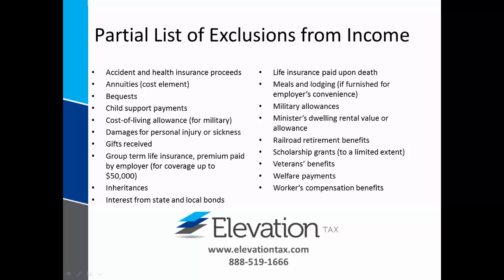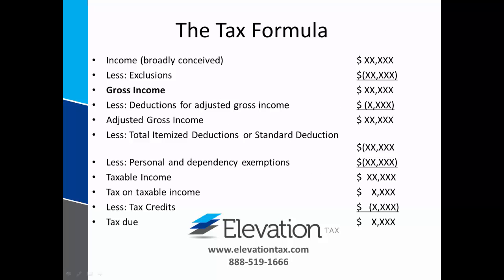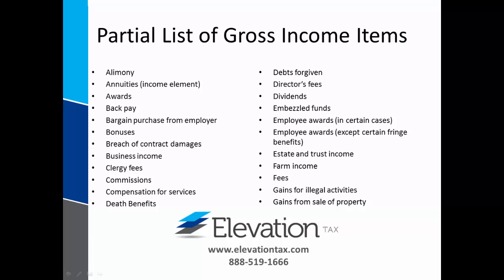Here is a partial list of some of the most common exclusions — you may want to pause the video to review this and other lists. The Internal Revenue Code defines gross income broadly as: "Except as otherwise provided, all income from whatever source derived." The "except as otherwise provided" refers to exclusions. Gross income includes but is not limited to the following items — there are a lot of items, so there are two pages worth.